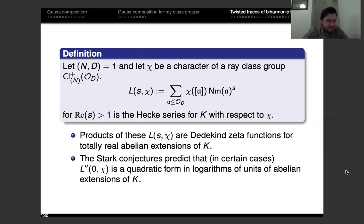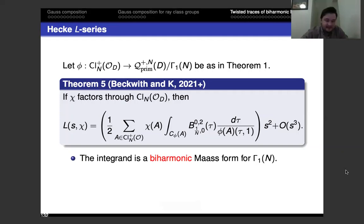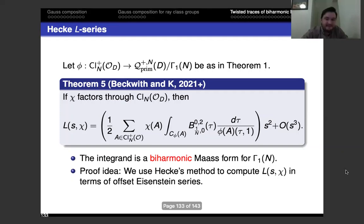Here is our result: a new formula for this leading coefficient, in the case when you have a character factoring through the wide ray class group. You can give a formula for this leading coefficient as a twisted trace where the integrand is a biharmonic Maass form — this B defined as a coefficient of an offset Eisenstein series. The proof is based on Hecke's method for Hecke's Kronecker limit formula.